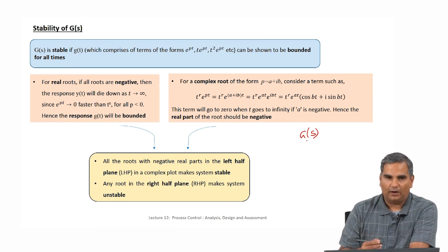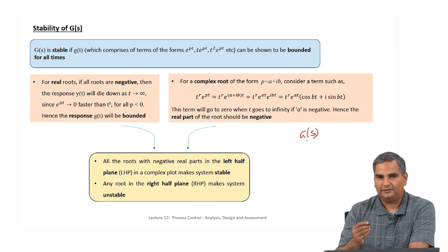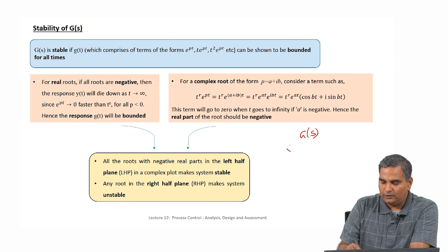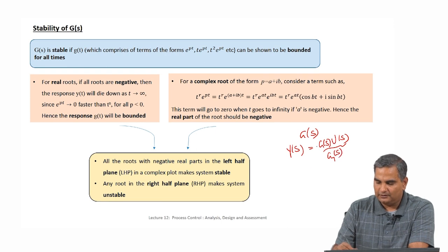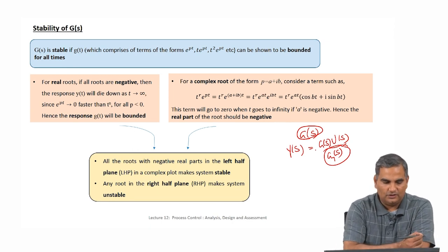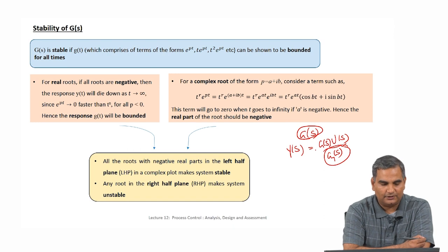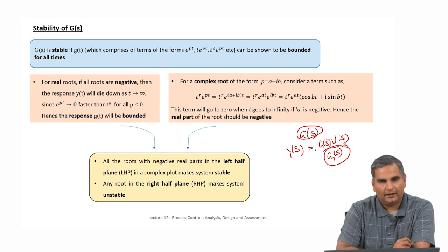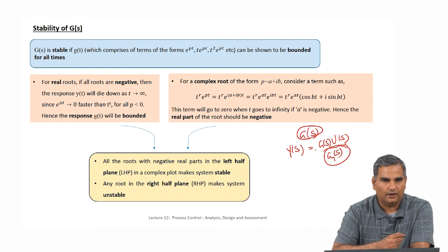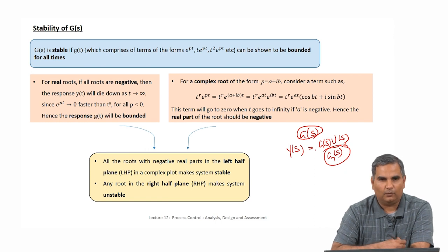If you define stability as output stability — that is, would my output be stable — then what you are looking for is the stability of Y(S), which is G(S) times U(S). Whatever ideas work for G(S) will also work for Y(S). I am going to explain stability in an intuitive fashion; however, it does not mean that we are going to do any hand-waving. All the results are exact, and because of the way we expand transfer functions in terms of partial fractions it makes it very easy for us to define what stability means.